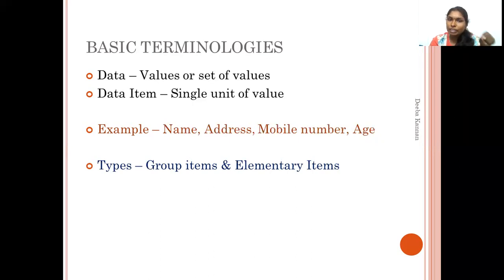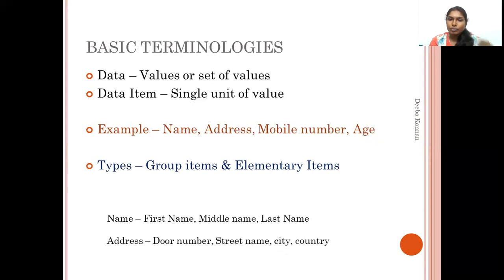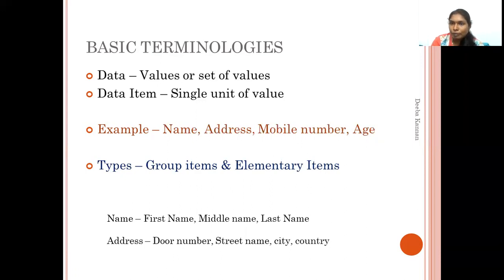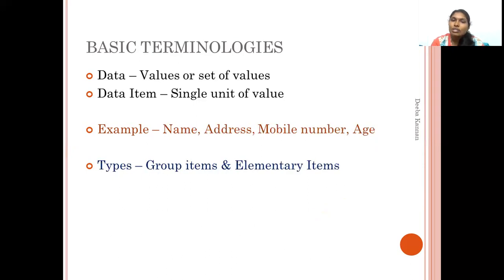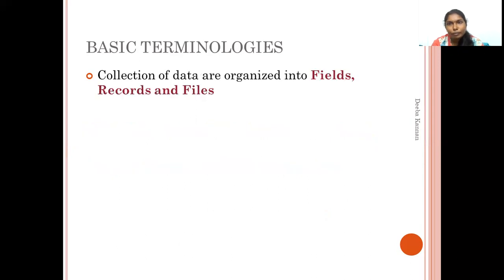We can split a single data item into sub-items. For example, address can be split into door number, street name, city, country — those are group items. If we look at the name, it can be split into first name, middle name, and last name — those are also sub-data items. Elementary items, on the other hand, cannot be split further — for example, mobile number and age are used as a single value. So there are two types of data items: group items and elementary items.